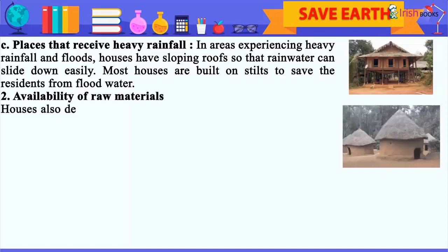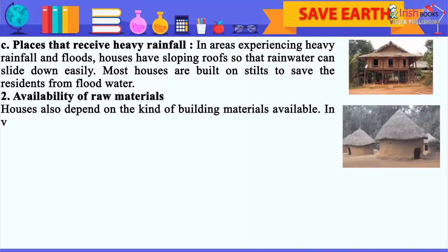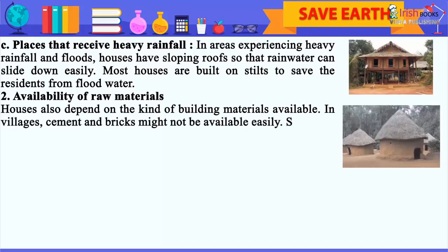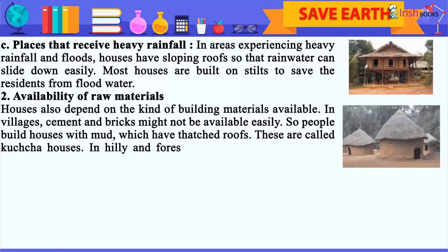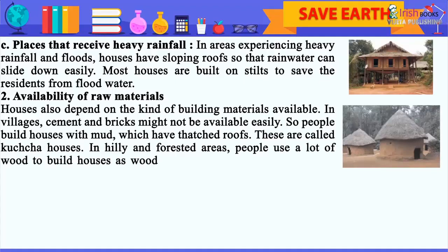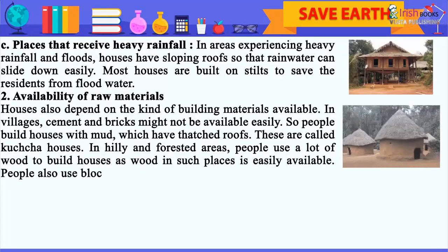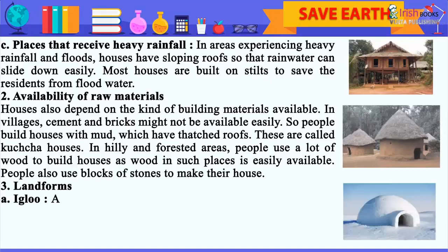2. Availability of Raw Materials. Houses also depend on the kind of building materials available. In villages, cement and bricks might not be available easily. So people build houses with mud which have thatched roofs — these are called kaccha houses. In hilly and forested areas, people use a lot of wood to build houses, as wood in such places is easily available. People also use blocks of stones to make their house.